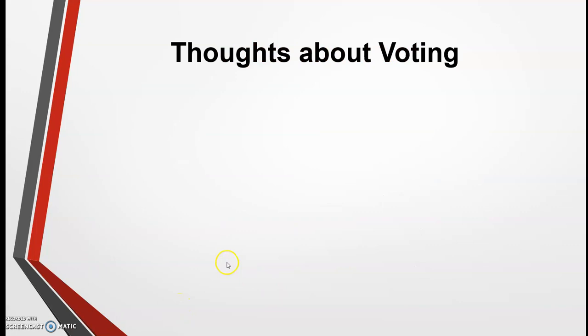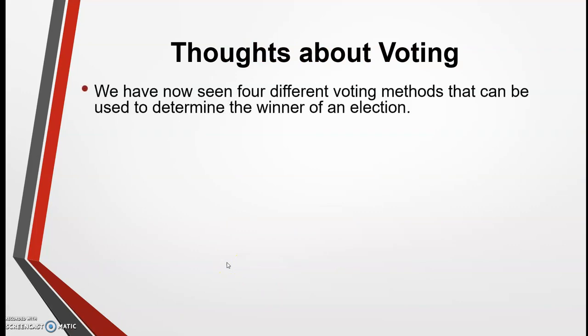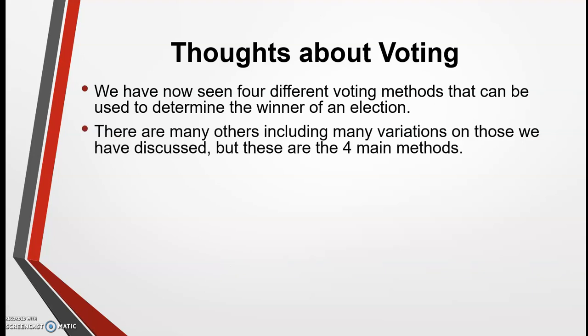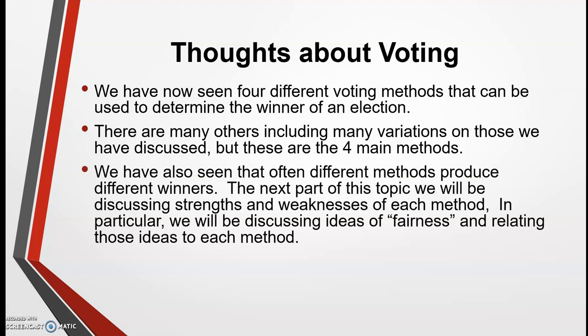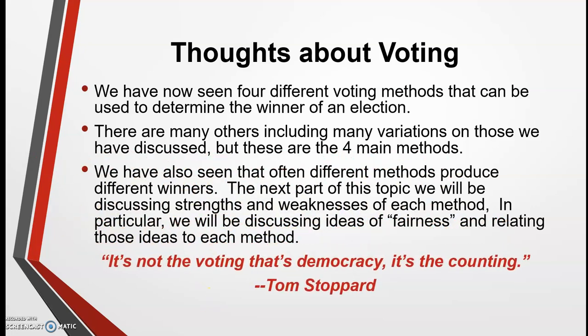As our final thoughts on voting methods: we have seen four different methods that can determine an election winner — there are many others, but these are the four main ones. A different method will often produce a different winner. The next and final part of Unit 1 will discuss the strengths and weaknesses of each method and the ideas of fairness. As Tom Stoppard said best: it's not the voting that's democracy, it's the counting.